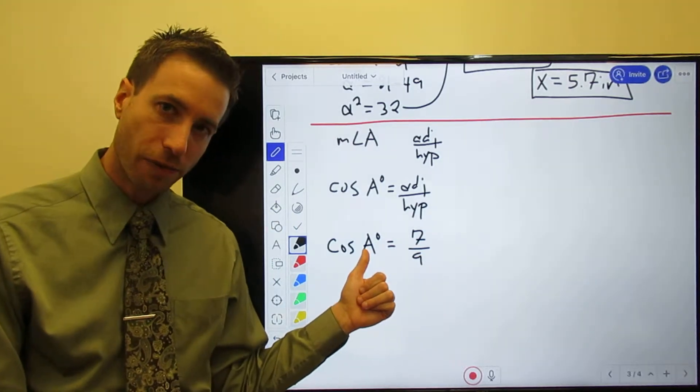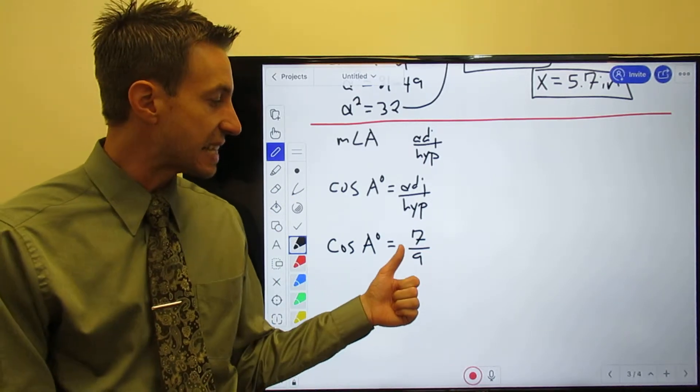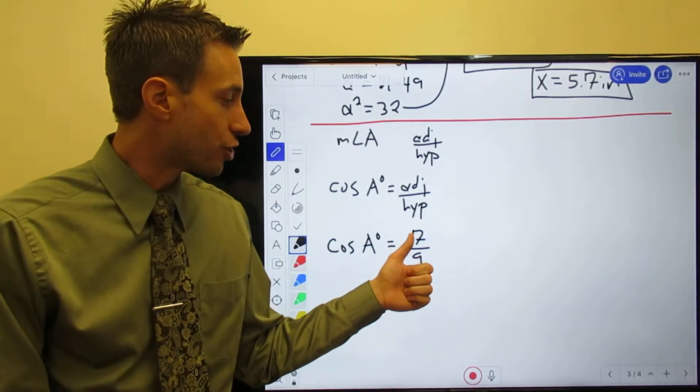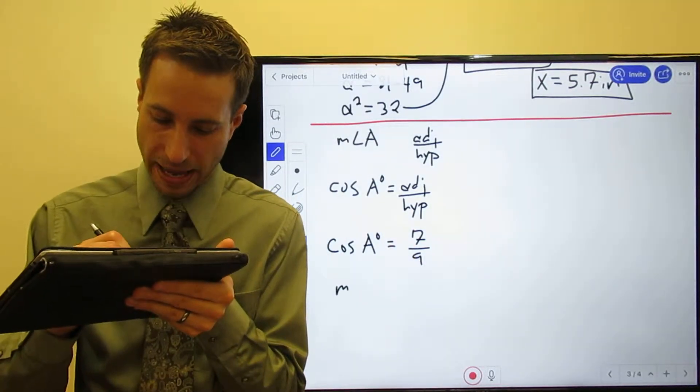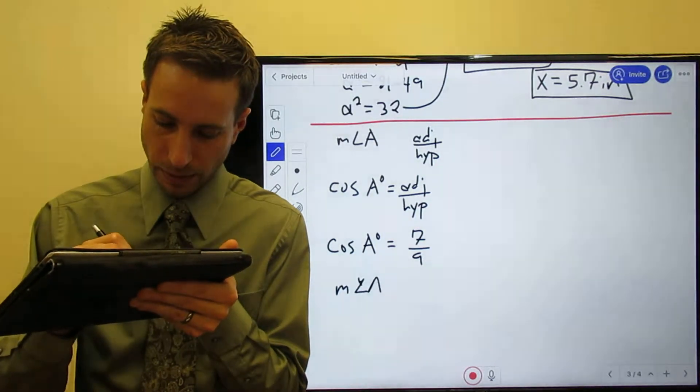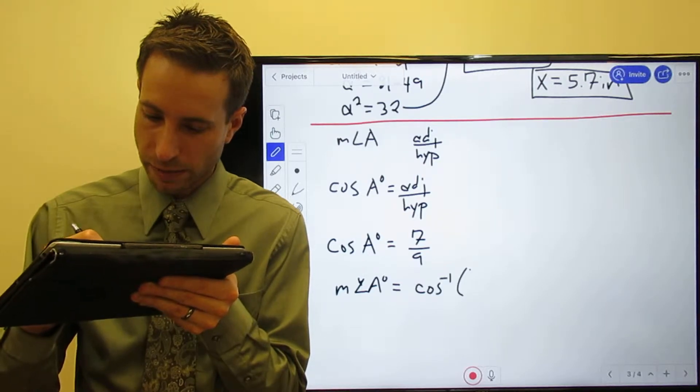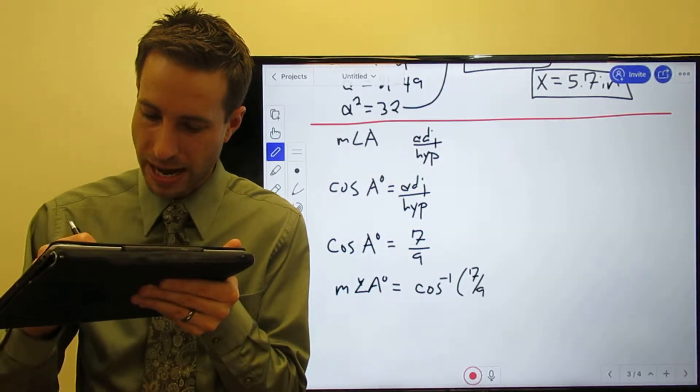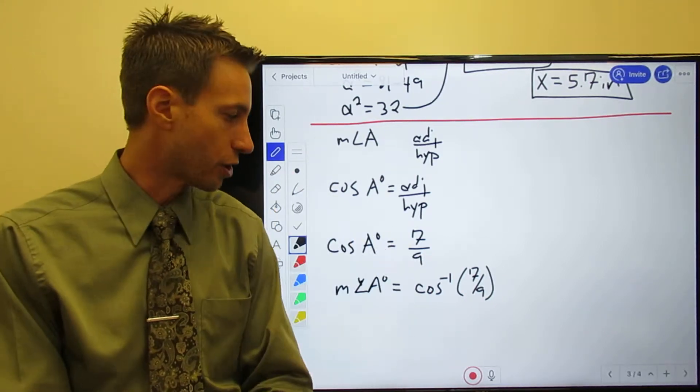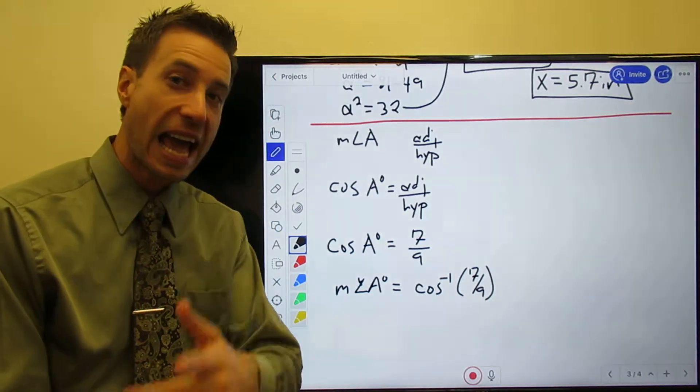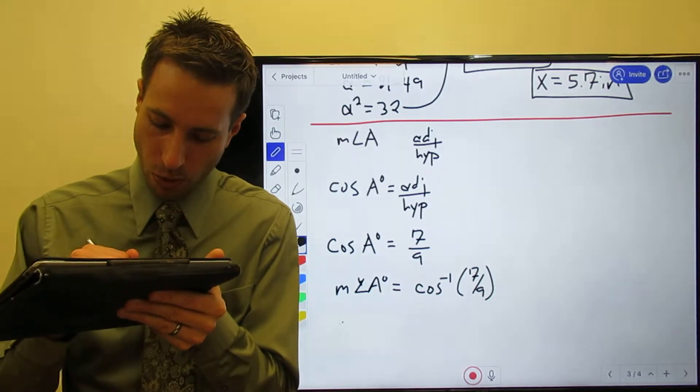How do I solve for A? That's right - remember the inverse trig functions. I take the inverse cosine of the adjacent over the hypotenuse, and that will give me the measure of angle A. So the measure of angle A is equal to the inverse cosine of 7/9. Every calculator is going to have an inverse cosine - it should probably be the second function on your calculator. We talked about that a couple sections ago.